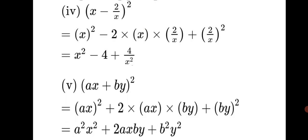Fifth sum: Ax plus By, the whole square. Using the plus formula: (Ax)² + 2×Ax×By + (By)². Opening the brackets: A²x² + 2AxyB + B²y². Since there are no other numbers to multiply, we just open the brackets and keep it as is.